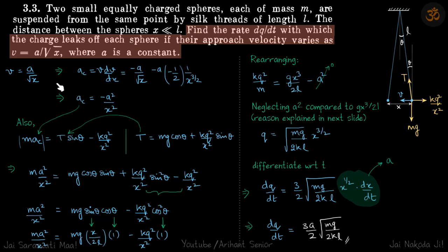Let's start with our acceleration of each ball that will be v dv by dx, and v is given in terms of x. We differentiate this multiplied by v and get acceleration as minus a square by x square.